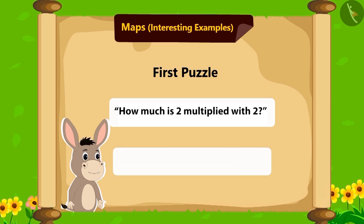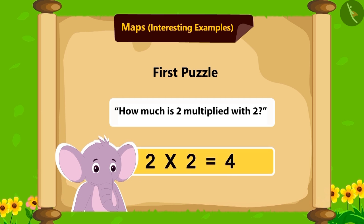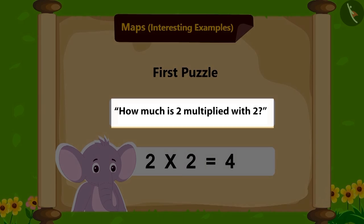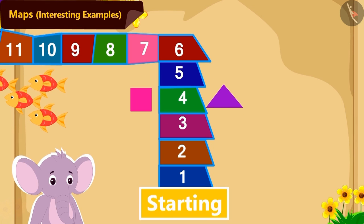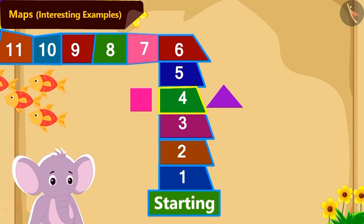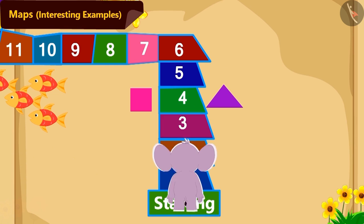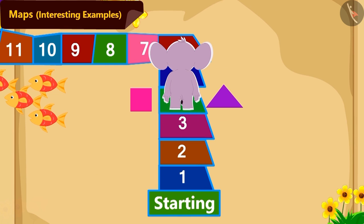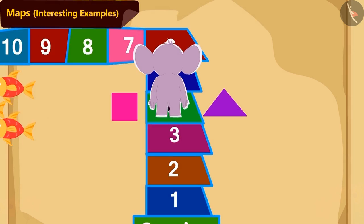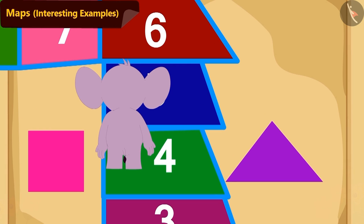Yes! 2 multiplied with 2 is 4. Appu has also found the solution to this puzzle. Now, how will Appu reach tile number 4 from the start line? By walking 4 steps straight, Appu has reached tile number 4.